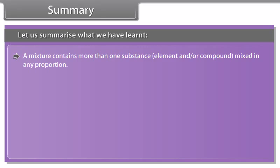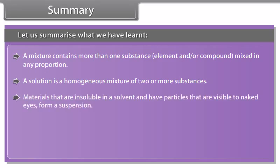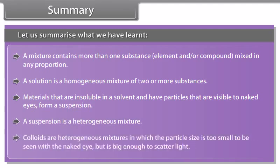Summary. A mixture contains more than one substance — element or compound — mixed in any proportion. A solution is a homogeneous mixture of two or more substances. Materials that are insoluble in a solvent and have particles visible to the naked eye form a suspension — a heterogeneous mixture. Colloids are heterogeneous mixtures in which the particle size is too small to be seen with the naked eye but big enough to scatter light.